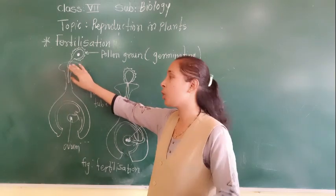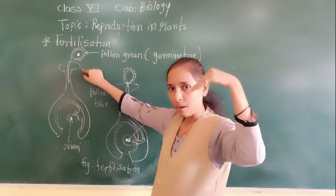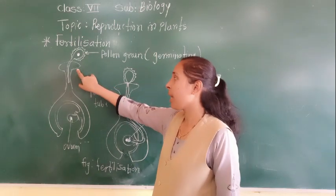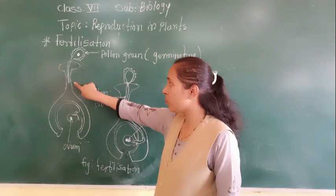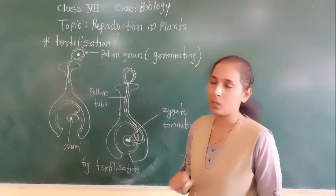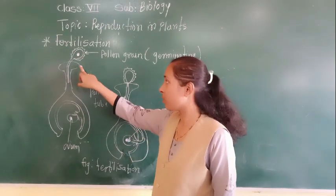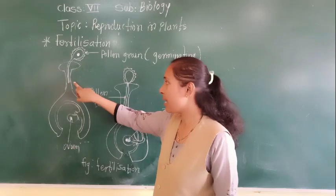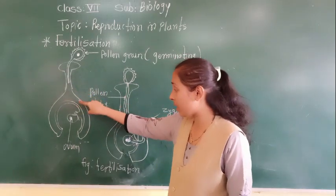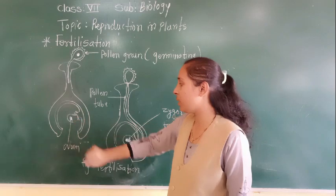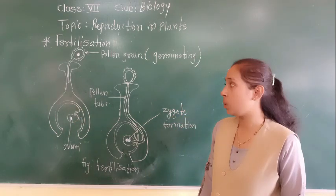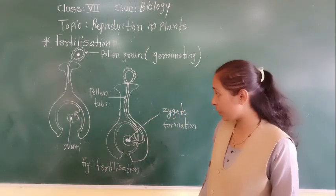The pollen tube passes through the stigma and then runs along the style. This is the stigma and style. The pollen tube then moves through the style and opens into the ovary.